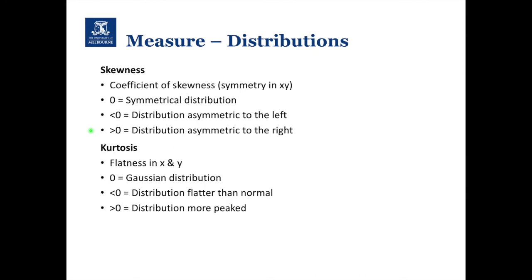We can also look at intensity distribution. Skewness looks at how symmetrical the distribution is — whether it's evenly distributed or more asymmetric to the left or right. Kurtosis is the flatness of the distribution — does it have a Gaussian distribution, or is it flatter or more peaked than normal?